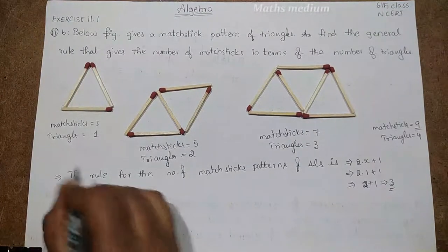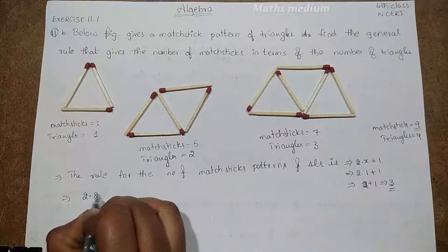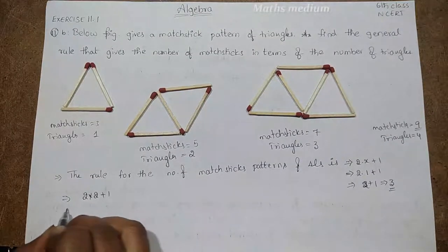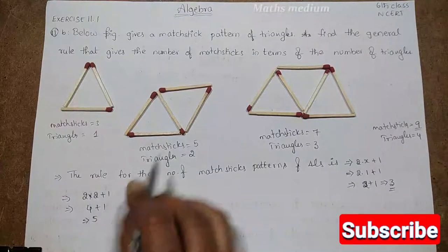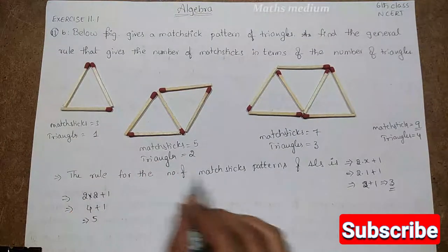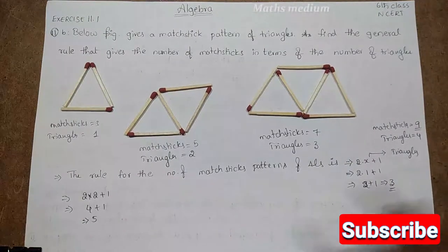If in case 2 into 2 plus 1, that is equal to 4 plus 1, is equal to 5 matchsticks. So here x means triangles.